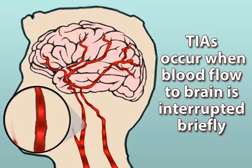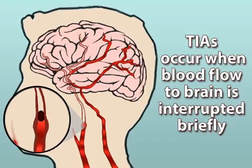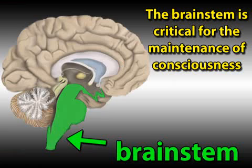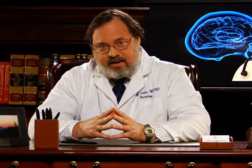Another common reason for loss of consciousness is a condition called transient ischemic attack, or TIA. In a TIA, blood flow to a piece of the brain is interrupted briefly, causing brain tissue to temporarily stop working. Some parts of the brain, such as the brain stem, are critical for the maintenance of consciousness. When a TIA affects this area, consciousness may suddenly be lost.